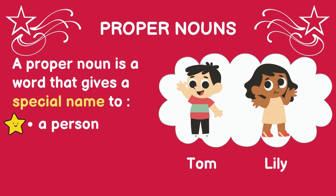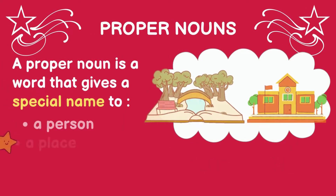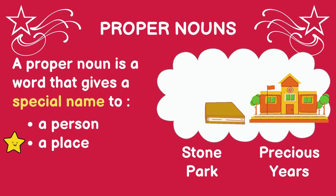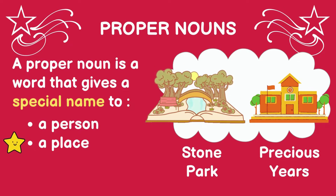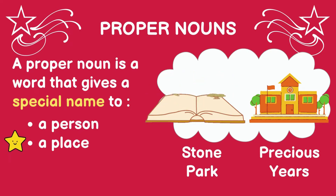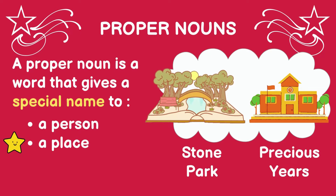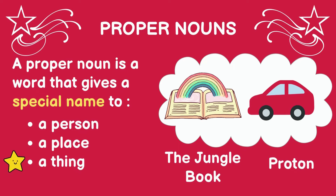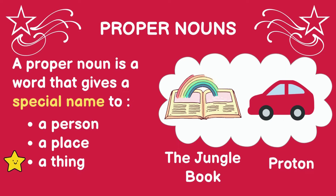Let's take a look at proper nouns. A proper noun is a word that gives a special name to a person, for example Tom and Lily. It can also give a special name to a place, for example Stone Park and Precious Years — the name of a school. It can also give a special name to a thing: the name of this book is The Jungle Book, and the name of the car is Proton.